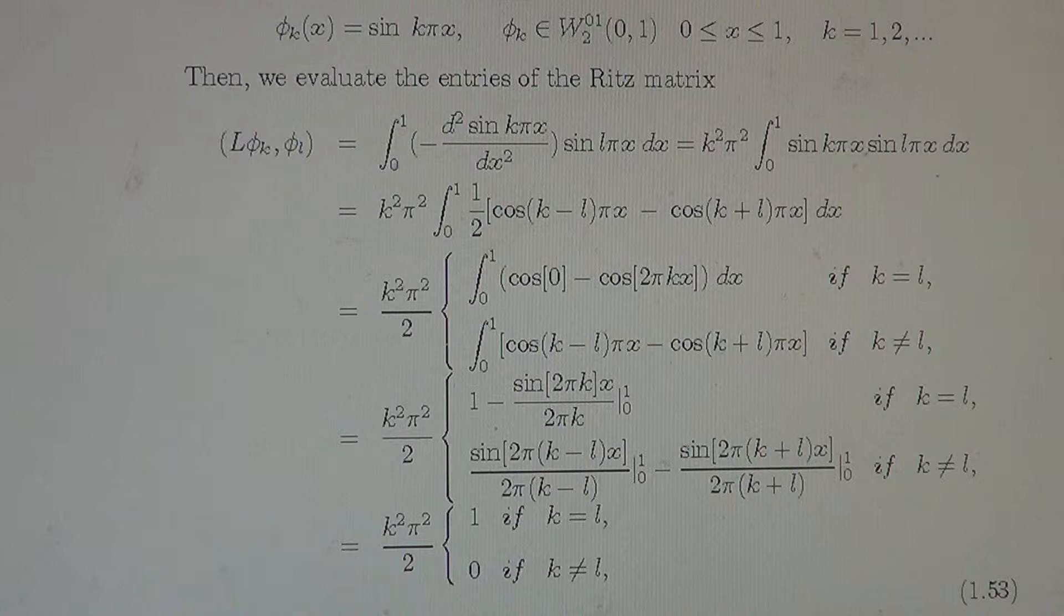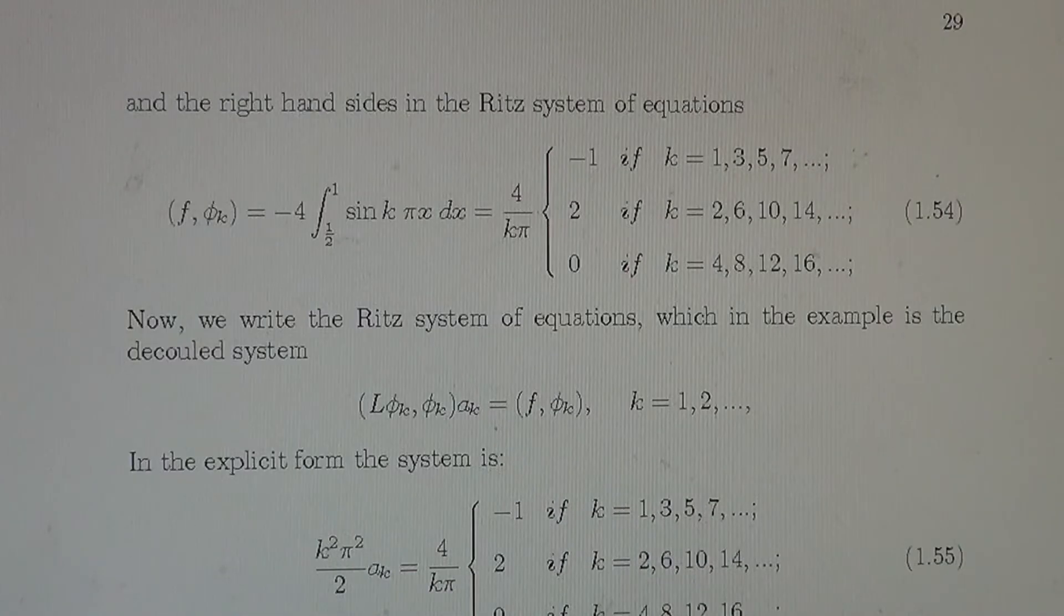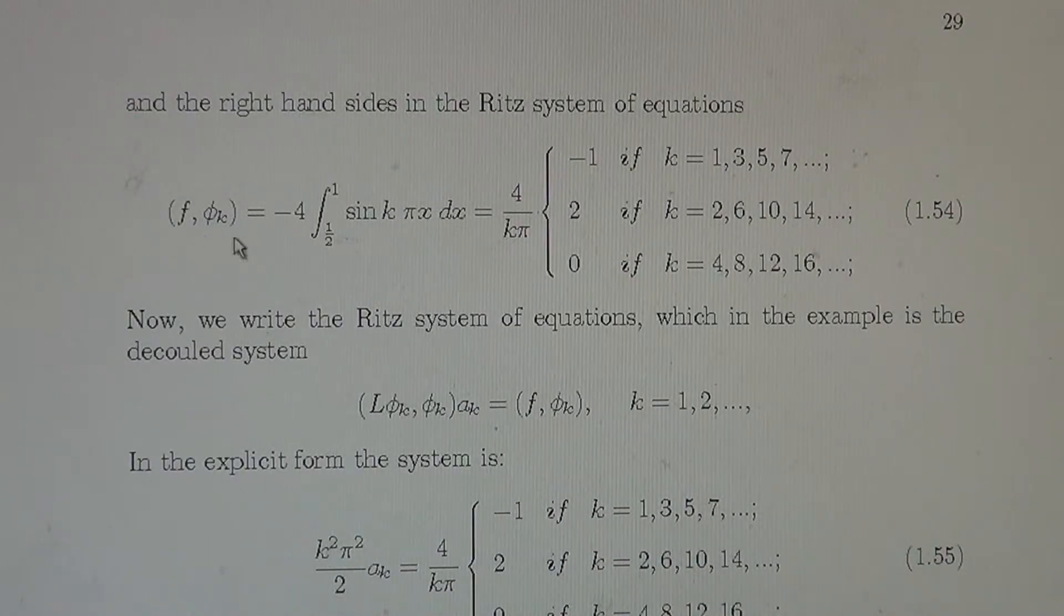So let us go to evaluate right hand sides. That product Fk is minus 4 integral from half to 1 because F is 0 from 0 to half sine. This integral is obvious, we integrate, we come to that result.